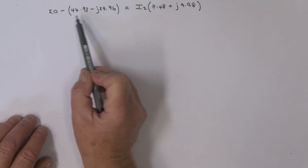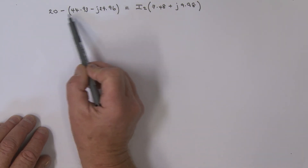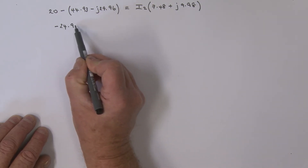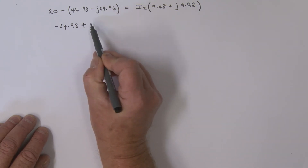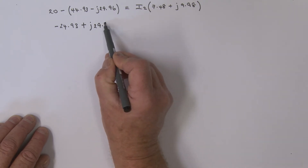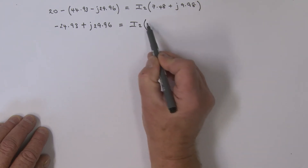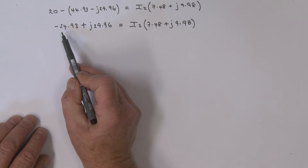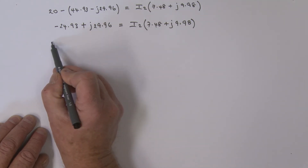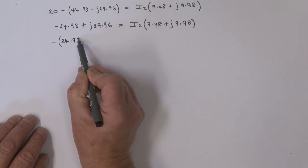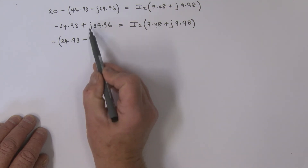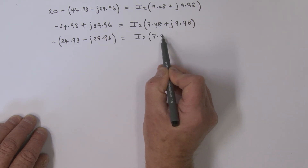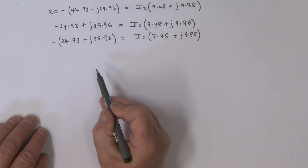Now I'll add the real parts on the left side: 20 minus 44.93 gives minus 24.93, and minus times minus gives plus j29.96. So we have minus 24.93 plus j29.96 equal to i2 times (7.48 plus j9.98). I'll factor out the minus sign from the left bracket, leaving 24.93 minus j29.96 inside, equal to i2 times (7.48 plus j9.98).